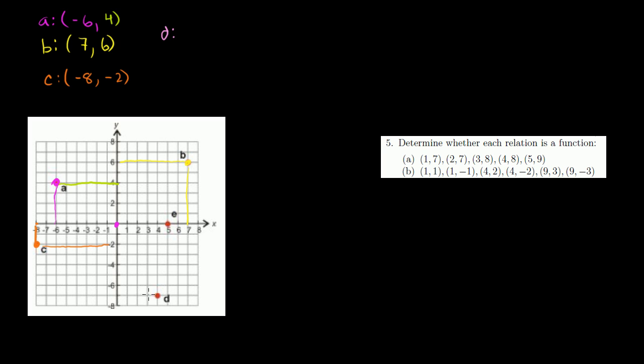Point D: its x-coordinate is at 4, and then its y-coordinate — how far down it is on the vertical axis — is negative 7. And then finally, point E is right there. Its x-coordinate is 5 — it's right on the x-axis at x equals 5. And its y-coordinate — it isn't above or below the x-axis — so its y-coordinate is 0. So E is at (5, 0). We've figured out all of those coordinates.